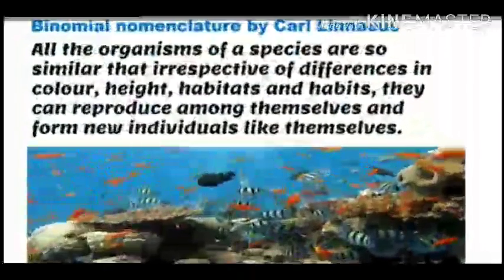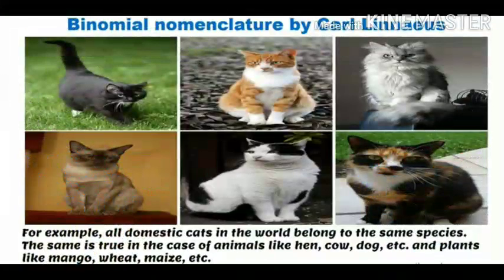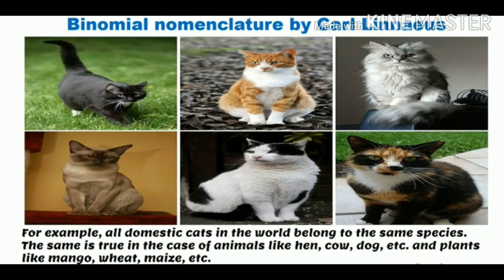All the organisms of a species are so similar that irrespective of differences in color, height, habitats, and habits, they can reproduce among themselves and form new individuals like themselves. For example, all domestic cats in the world belong to the same species. The same is true for animals like hen, cow, and dog, and plants like mango, wheat, and maize.